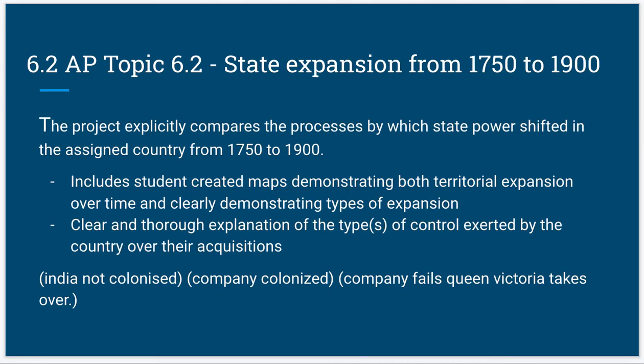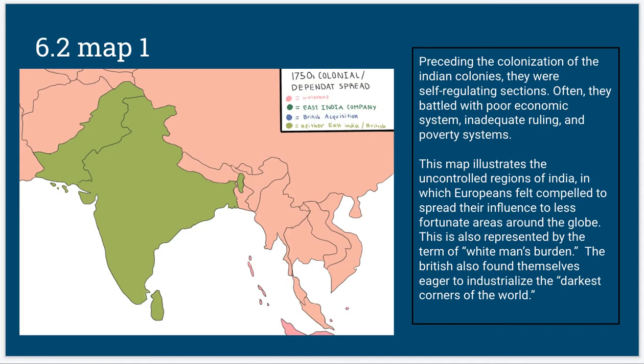In 6.2, the idea of state expansion and control regions are illustrated. In our first map, we have the demonstration of there being limited control over India. They were a mainly free region. Preceding the colonization, they were self-ruled and controlled, usually from different regions.